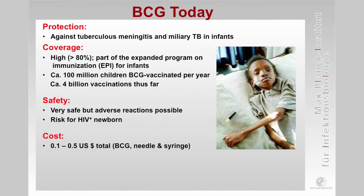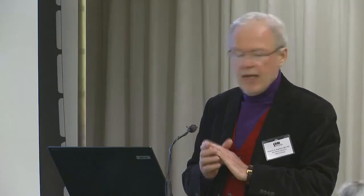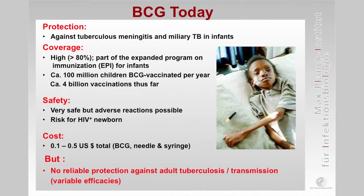So why do we need a new vaccine? BCG is there — it's the most widely used vaccine in the world, given more than four billion times, with 100 million children BCG vaccinated every year. It's safe under normal conditions, as safe as a live vaccine could be. However, there is clearly a risk for newborns delivered by HIV-positive mothers, and the cost is very low. It even partially protects against tuberculosis meningitis and other severe forms of TB in infants. However, it does not protect against pulmonary TB in any age group.